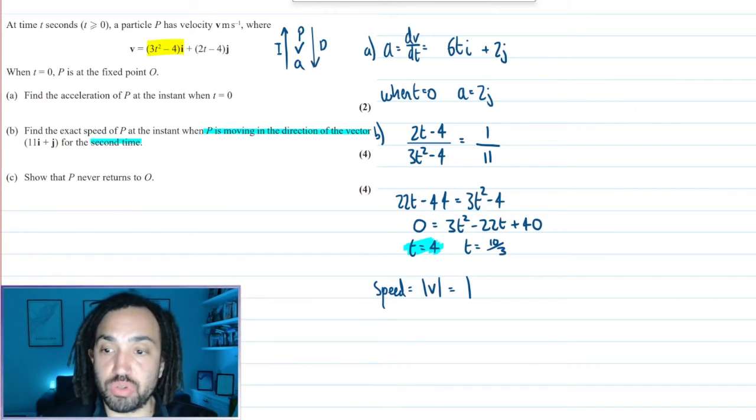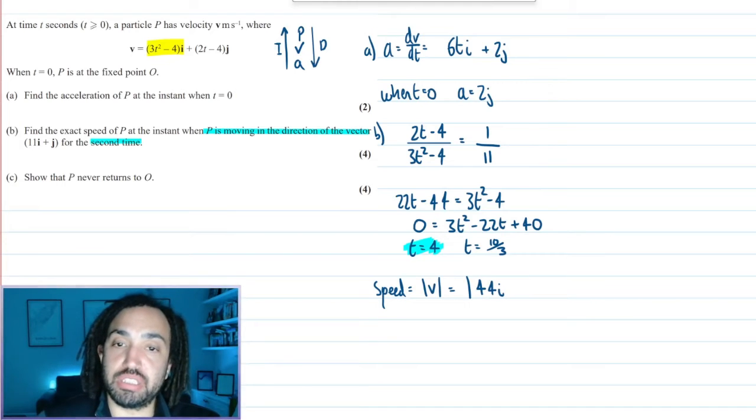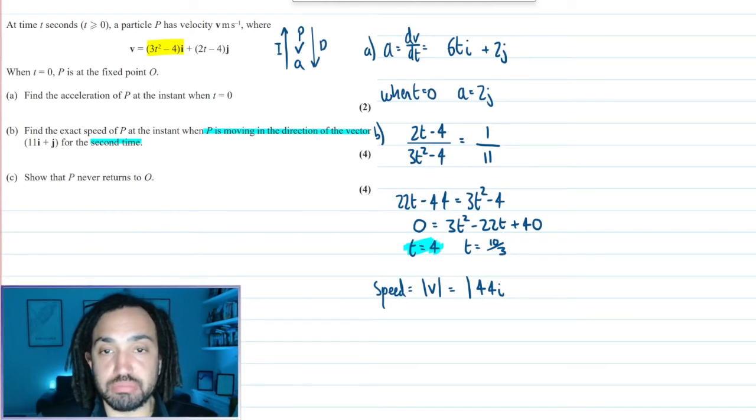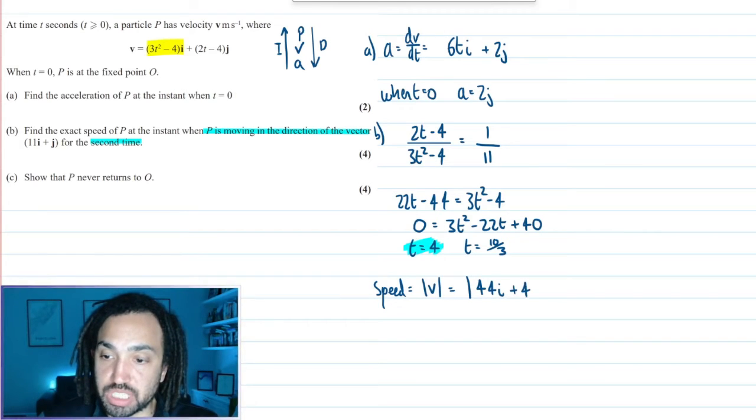So I get 3 times 4 squared is 48 minus 4 is 44. That's the i component. And subbing into the j, I get 2 times 4 minus 4 is just 4, so 4j.